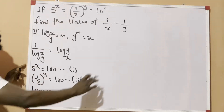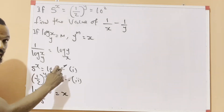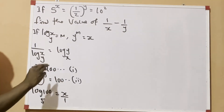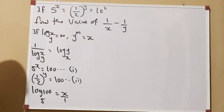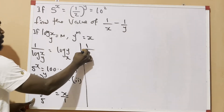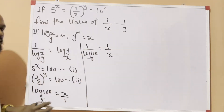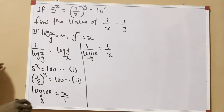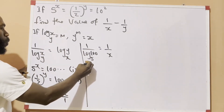From this point I have x, but what we need is 1 over x. So I have to reciprocate x — turn it upside down. Whatever you do to one side of the equation you do to the other. So this becomes: 1 over log 100 base 5 equals 1 over x. And since 1 over log x base y equals log y base x, we get: 1 over x equals log 5 base 100.